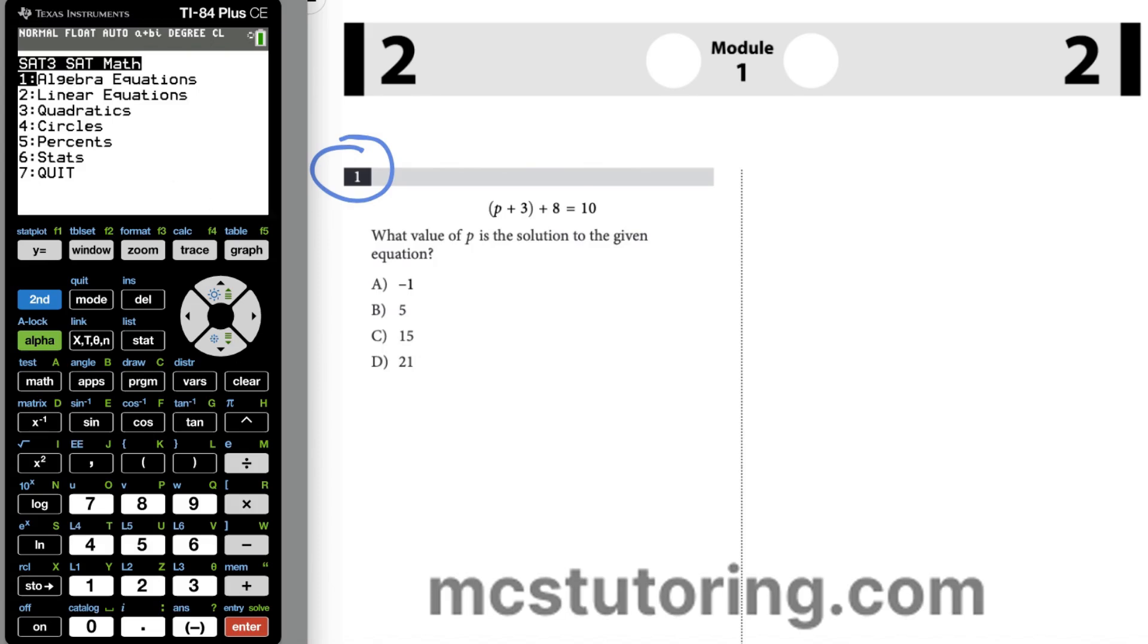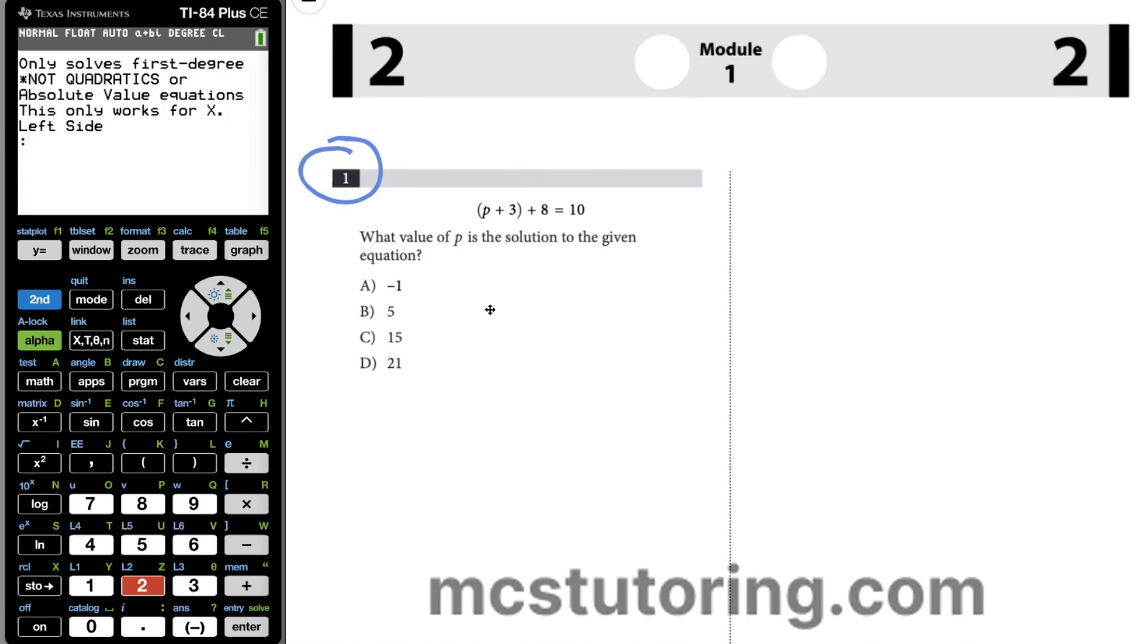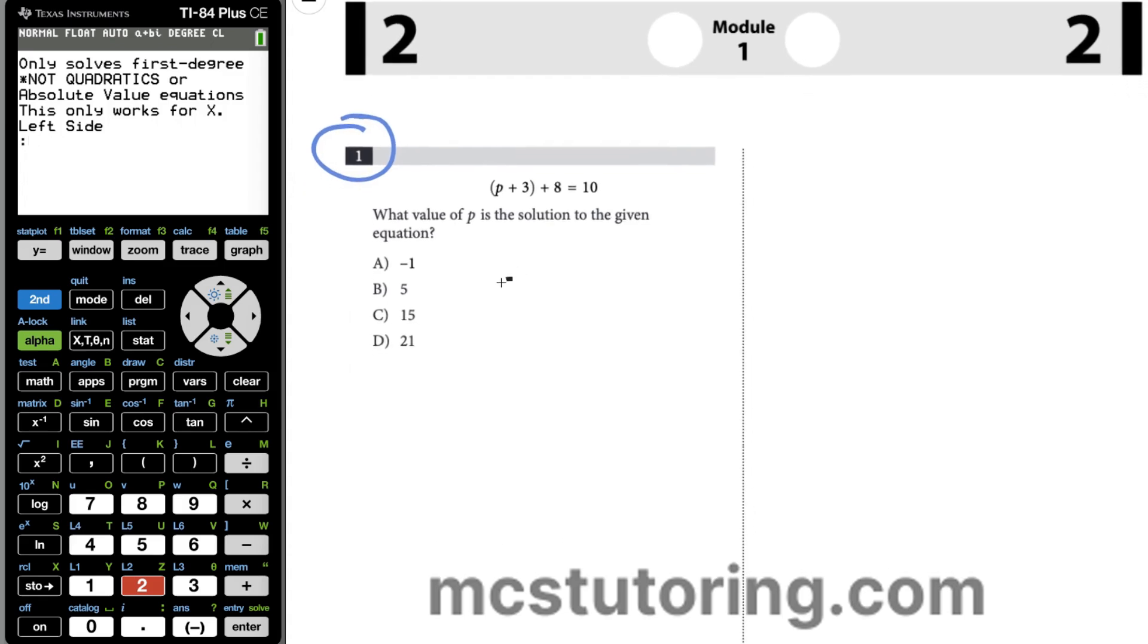From the main menu, we're going to choose Algebra Equations, and then we're going to solve the equation. Instead of using P, we're going to use X. So it's going to be X plus 3 plus 8 equals 10. Because we only have the X variable here, just to the right of the alpha key. So the left-hand side is X plus 3 close parentheses, plus 8. And the right-hand side is 10. We get X equals negative 1, so that's the first choice, A.